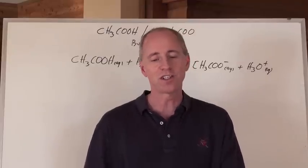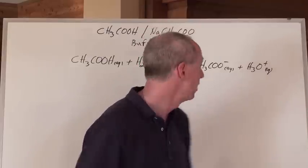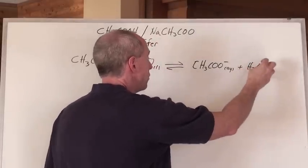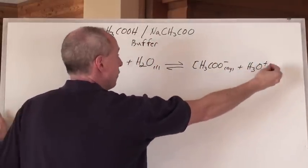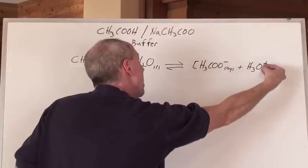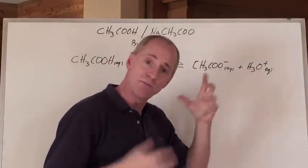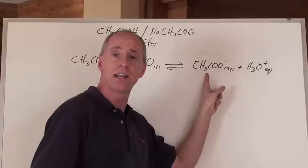So, again, buffers resist a change in pH when small amounts of acid or base are added because large amounts then start to, if you added a lot of acid here and you reacted this way, you're going to be limited by, in terms of buffer capacity, by the amount of acetate you have.